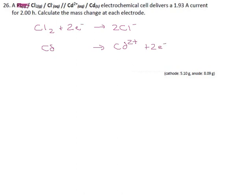They're asking for two mass changes, which means we get to do our It = Fn calculation twice.